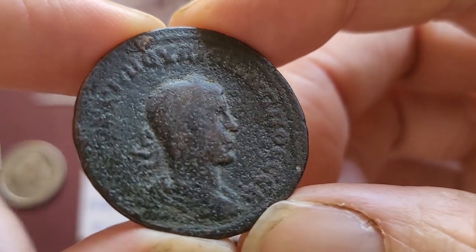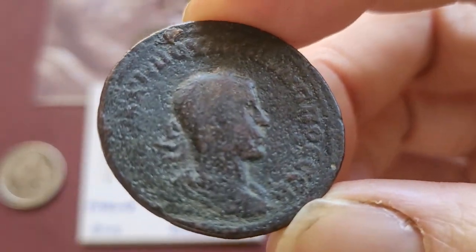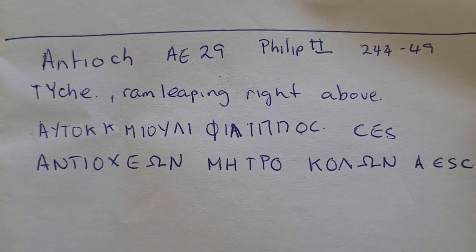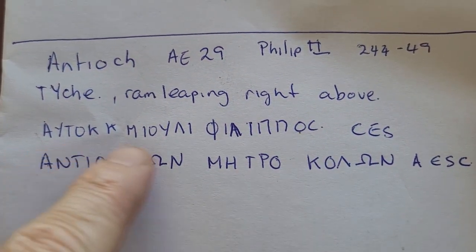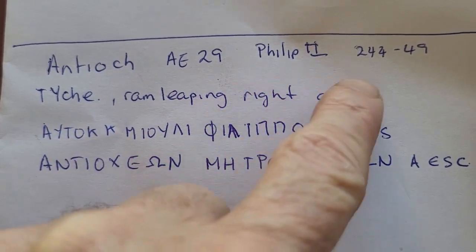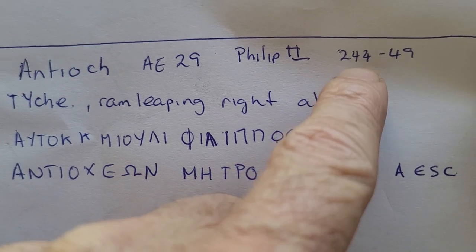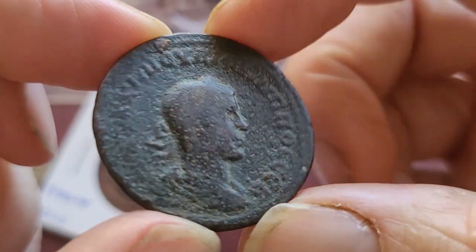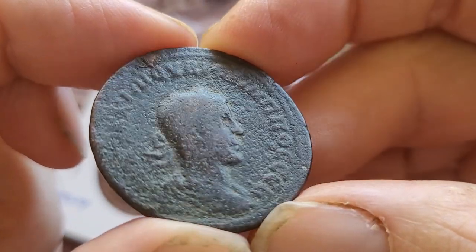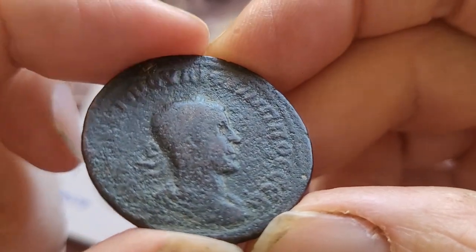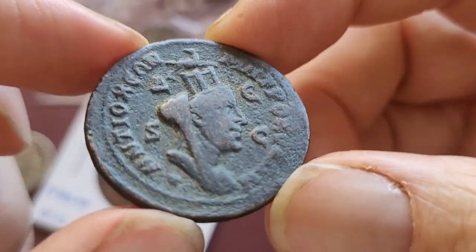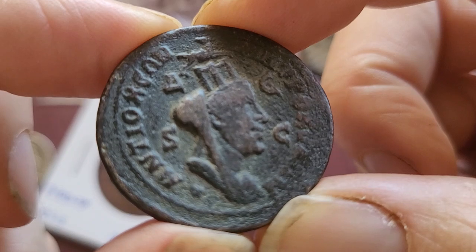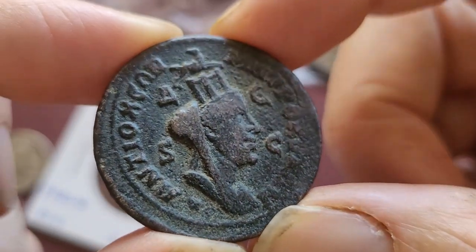On this side we have an effigy of Philip the Arab. I did write down the inscription — Antioch is the name. This is the time period that these were issued: 244 to 249 AD, so about 1,800 years old. These ones probably cost about $40–$50. It's not in the greatest condition, so it seems to have been in circulation for quite a long time. The average circulating coin circulated for about 30 years in Roman times.